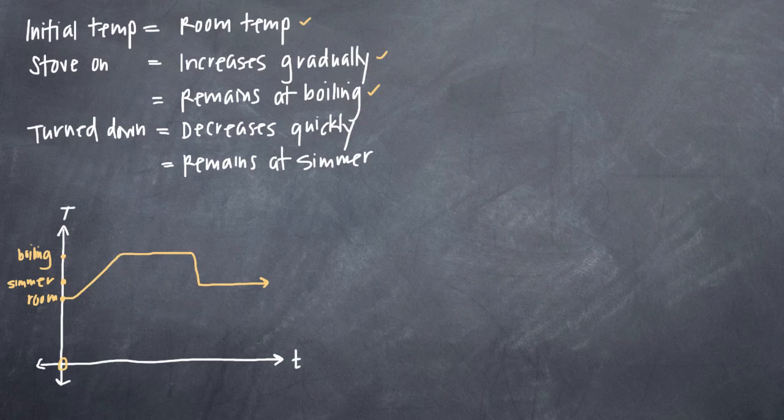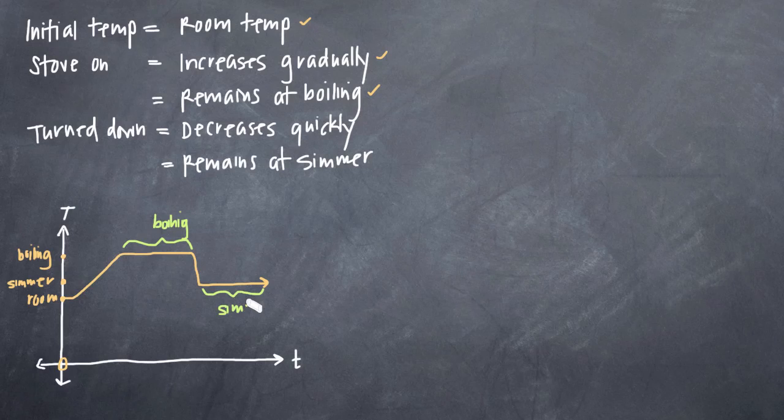And if we wanted to label different parts of our graph here, we could do so. We could call this part a simmer if we wanted to be thorough about labeling the different parts of our graph.